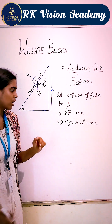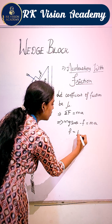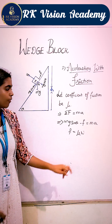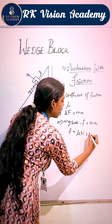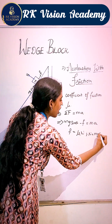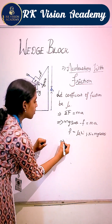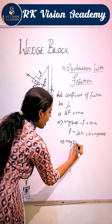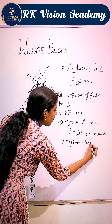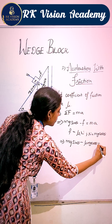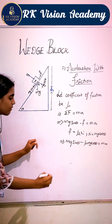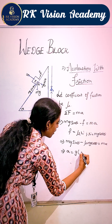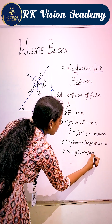Now, what is the friction force? Friction force is equal to the coefficient of friction into the normal force. In the previous video, we found that the normal force is equal to mg cos theta. So, if we apply these two equations, we get mg sine theta minus mu mg cos theta equal to mass into acceleration, which gives the acceleration of the block as g into (sine theta minus mu cos theta).